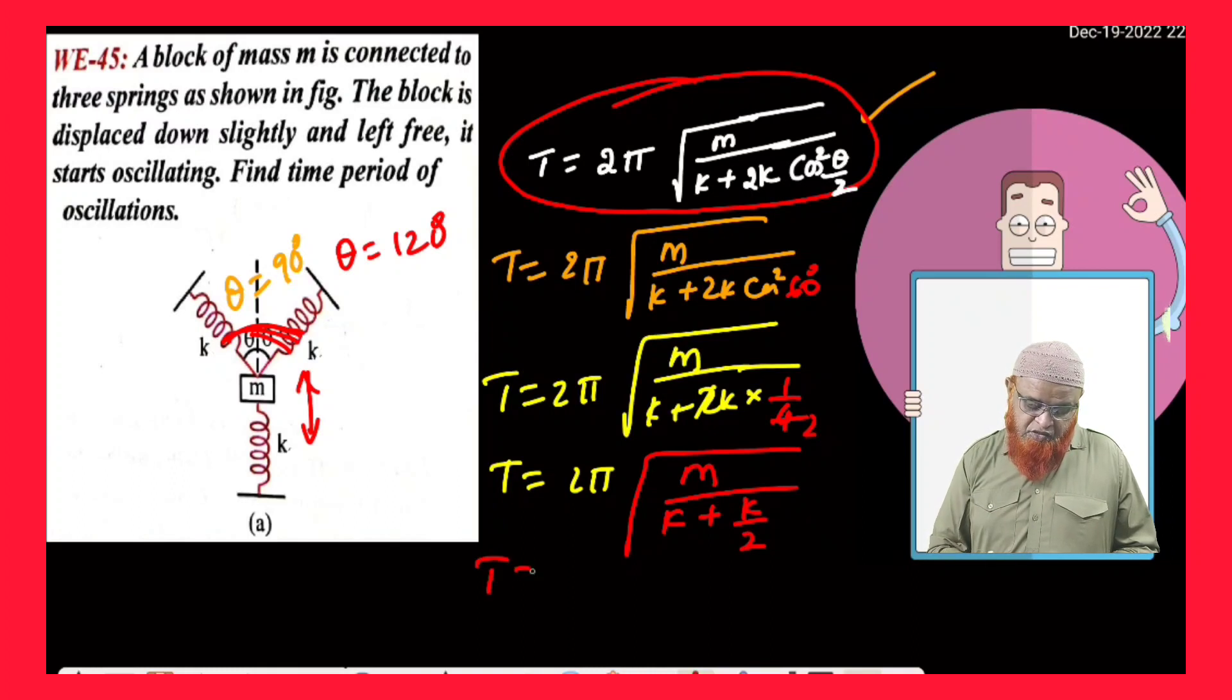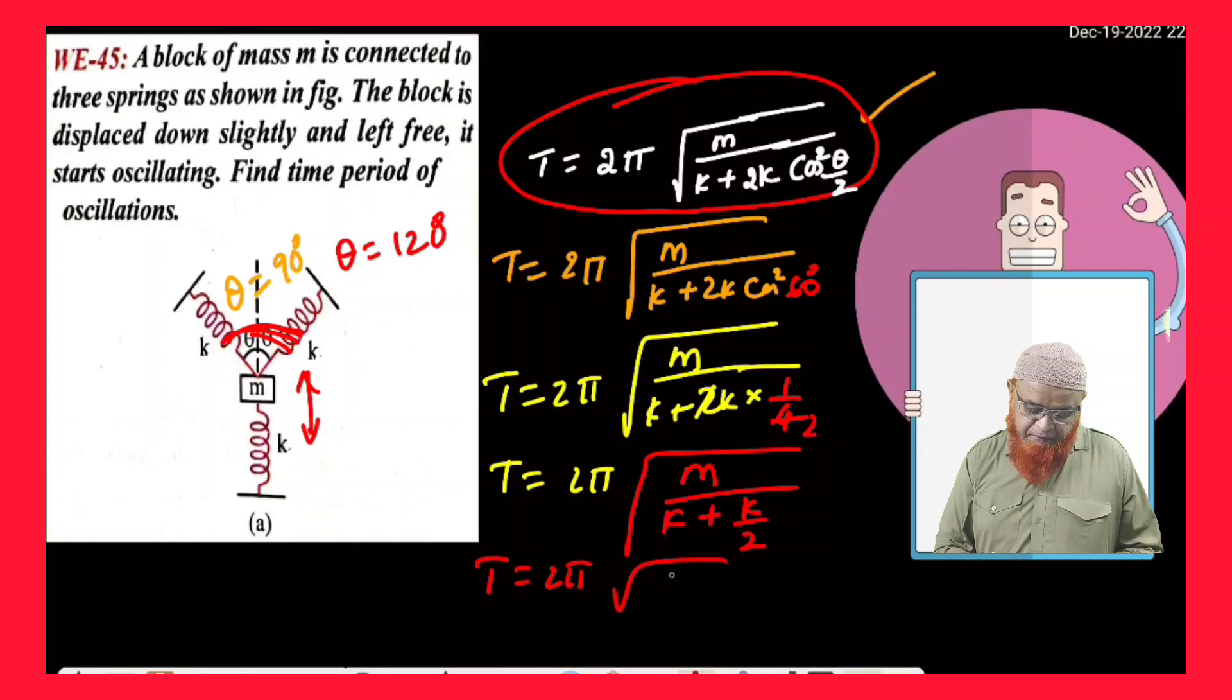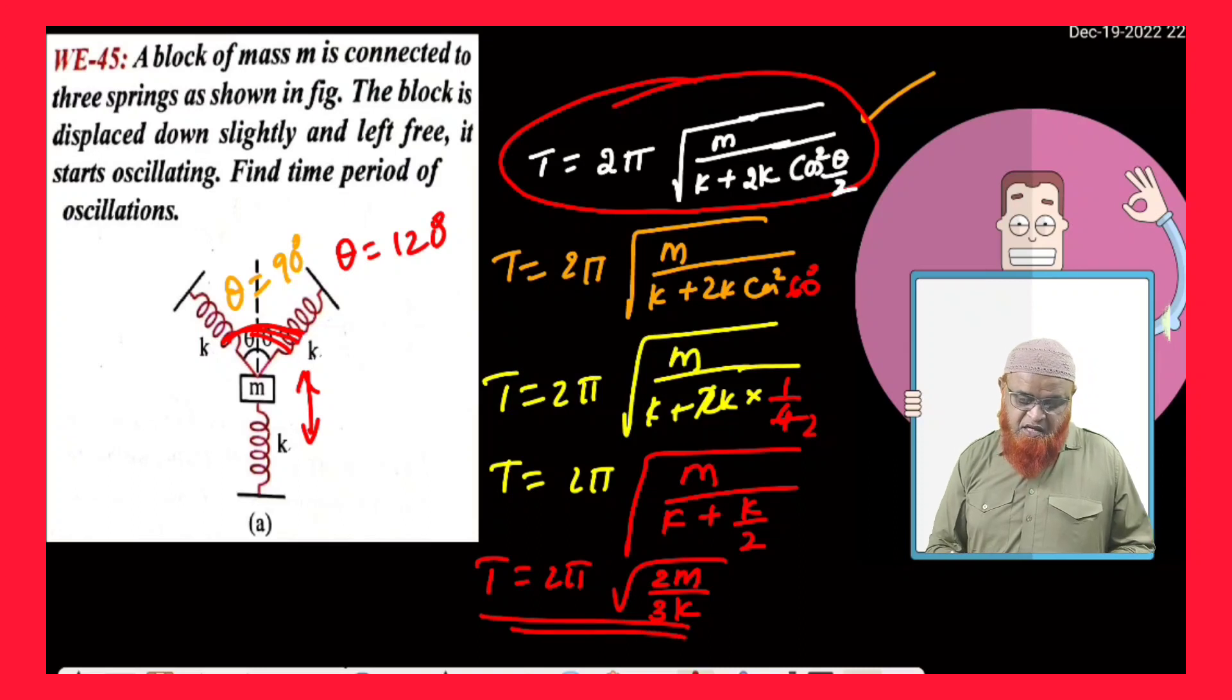Therefore, T is going to be 2π root of 2M by 3k. So, this is going to be your final answer if you consider 60 degrees. Thank you very much.